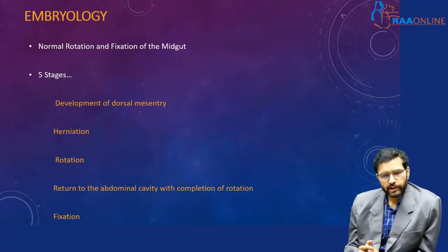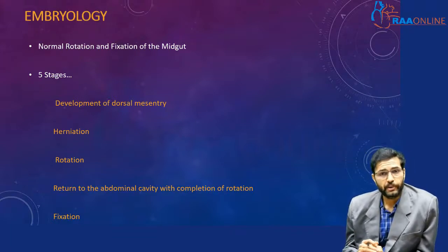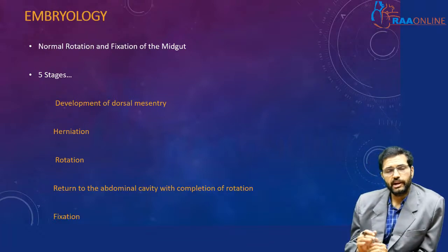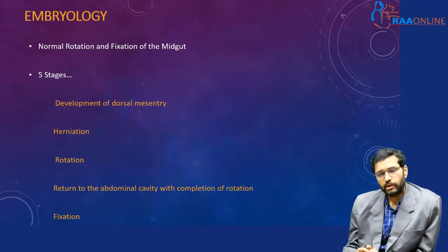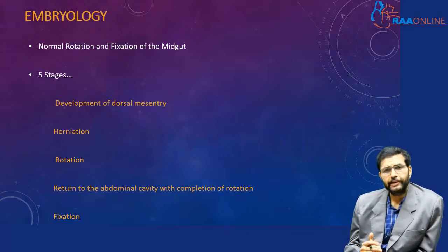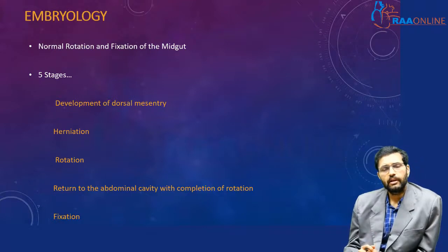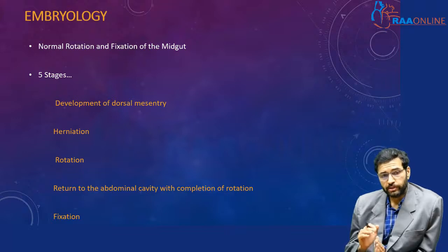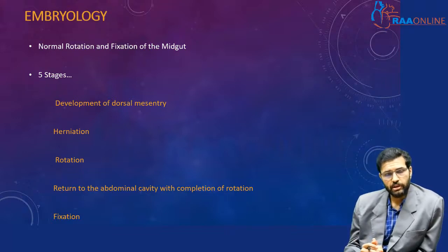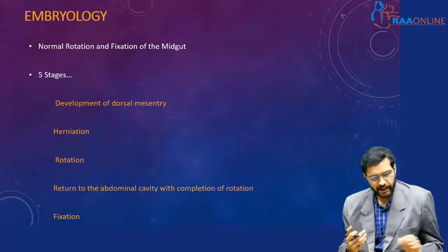Malrotation is very difficult to understand without going into detail regarding the embryological aspects of gut rotation, especially of the midgut. Normal rotation and fixation of the midgut has five stages: first, development of dorsal mesentery; second, herniation; third, rotation; fourth, return to the abdominal cavity with completion of rotation; and fifth, fixation. We will discuss each stage in detail.